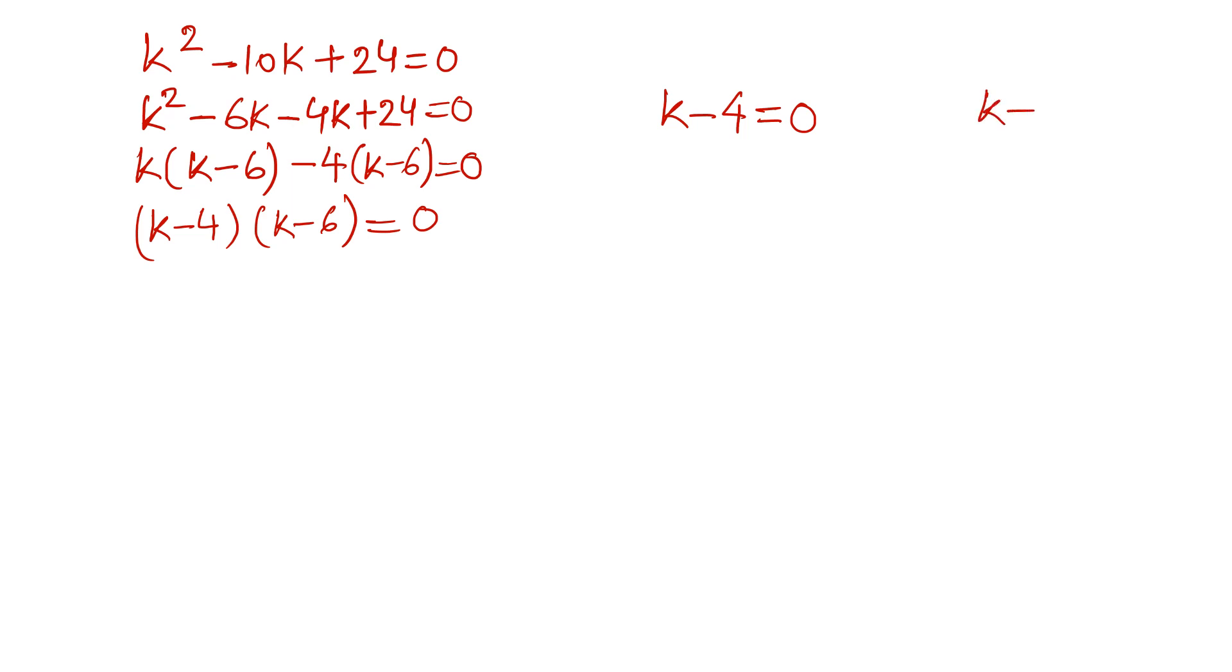k square minus 10k plus 24 is equal to 0. k square minus 6k, split minus 10k as minus 6k minus 4k plus 24 is equal to 0. Take k outside k minus 6, minus 4 outside k minus 6 is equal to 0. k minus 4 and k minus 6 is equal to 0. So your solution is either k minus 4 is equal to 0 or k minus 6 is equal to 0.